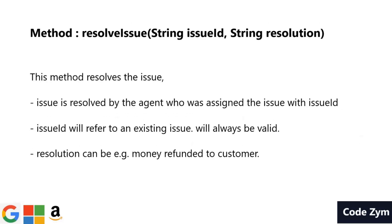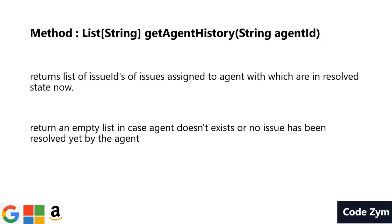The next method is resolveIssue. It will simply resolve an issue. Issue ID will always be valid and there will be a resolution. Resolution will always be done by the agent who was assigned the issue in the first place. The next is the getAgentHistory method. If the agent doesn't exist, return an empty list; else return all the issue IDs of issues that have been assigned to the agent and are now in a resolved state.